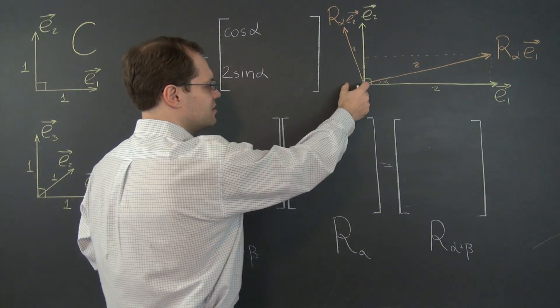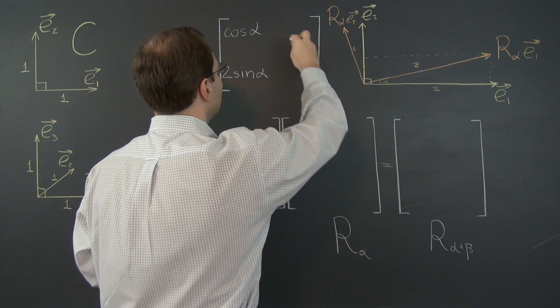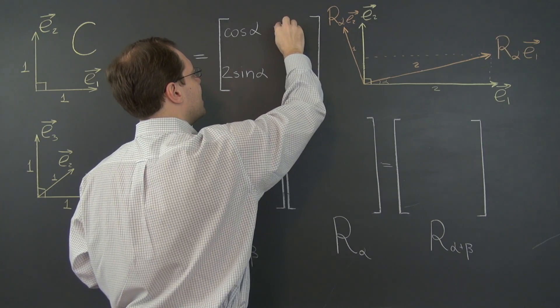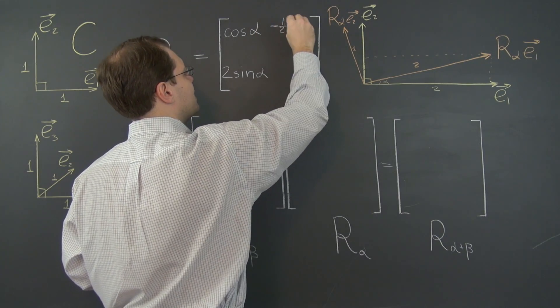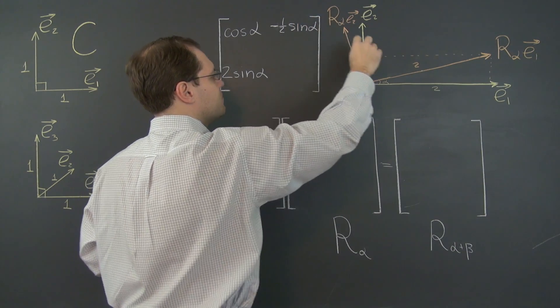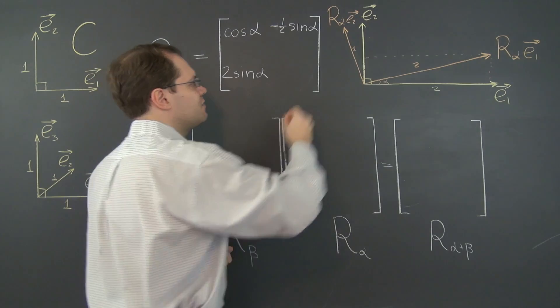Or in other words, compare the length of this vector to a vector that's twice as long as it was before. So before it was minus sine alpha so it's now minus half sine alpha.